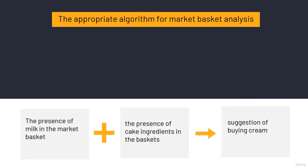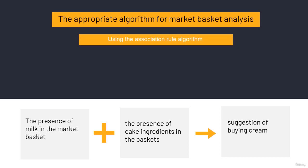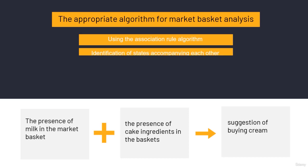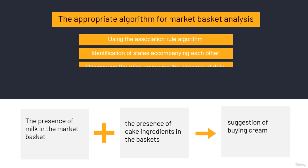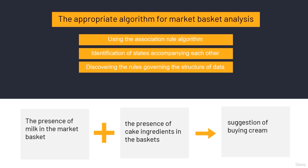That's it for the market basket. The most suitable algorithm is the association rule. This algorithm aims to identify rules that happen together, like items that are bought together. It identifies the patterns between them and extracts the rules governing the structure of the data, giving the client a useful output based on which it can make rational decisions.